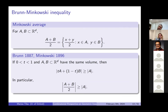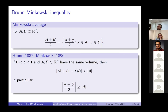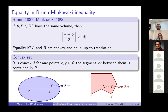The Brunn-Minkowski inequality is a fundamental tool in convex geometry and analysis relating the size of the Minkowski sum to the sizes of the individual sets. Precisely, if t is between 0 and 1 and A and B are sets in ℝ^d with the same volume, then the average tA + (1−t)B has size at least the size of A. Equality holds if and only if A and B are convex and equal up to translation.